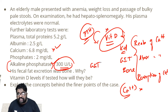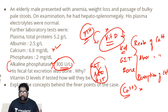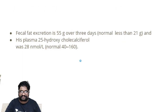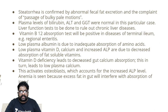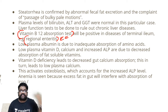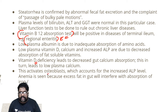GGT, AST, and ALT are not mentioned, meaning they are supposed to be normal — so it is not a problem of the liver; it is a problem of the GIT alone. This is a classical case of steatorrhea where the patient is suffering from nutritional malabsorption. Vitamin B12 absorption can become positive because the patient may have regional enteritis. Also, poor vitamin D can lead to activation of osteoblasts, which is the reason for the increased ALP level.